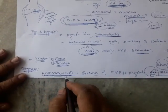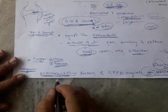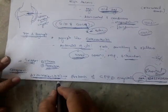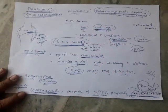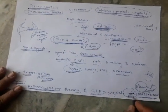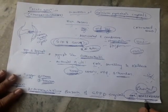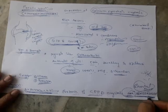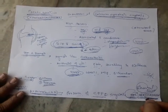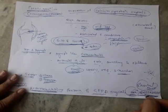Coming to the diagnosis: Arthrocentesis is performed. We aspirate and see under the polarized light microscope for the presence of CPPD crystals, that is calcium pyrophosphate crystals. Here we can see positive birefringence. This is the most important differentiation between gout and pseudogout.